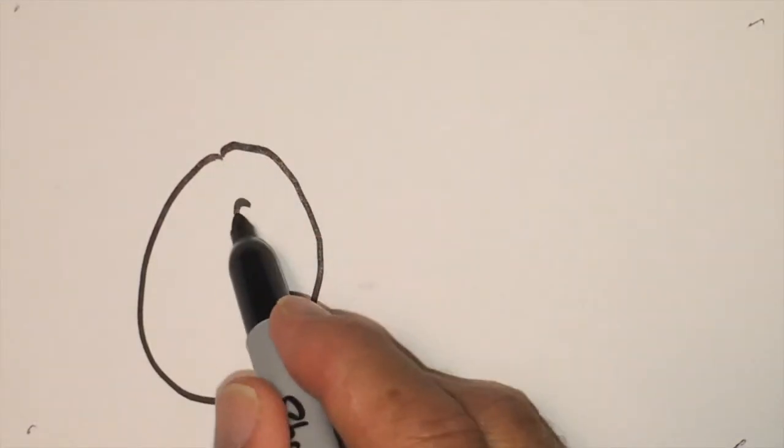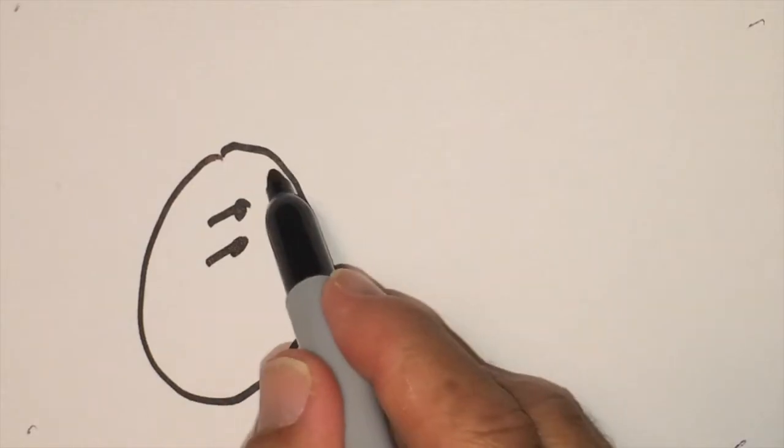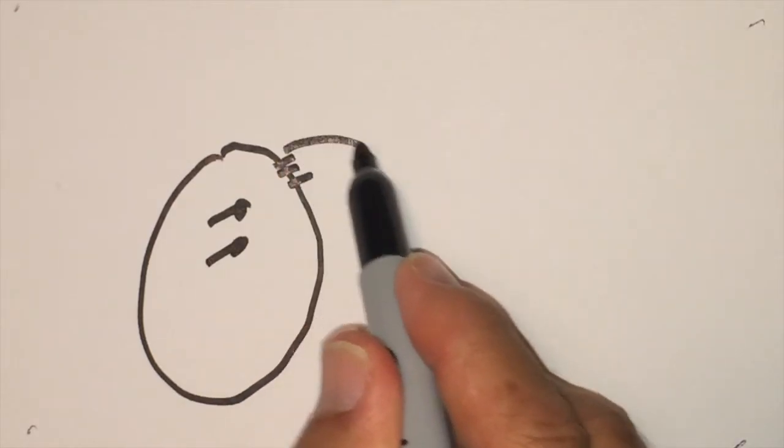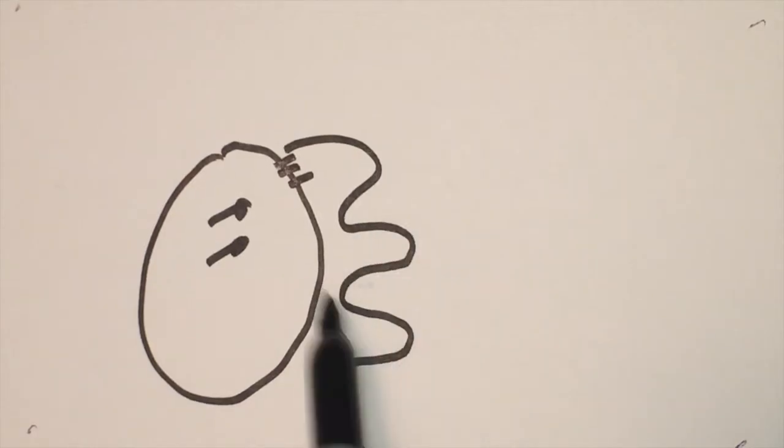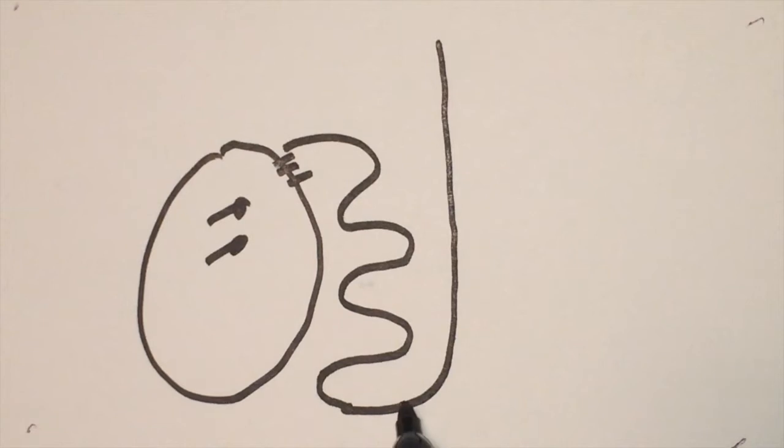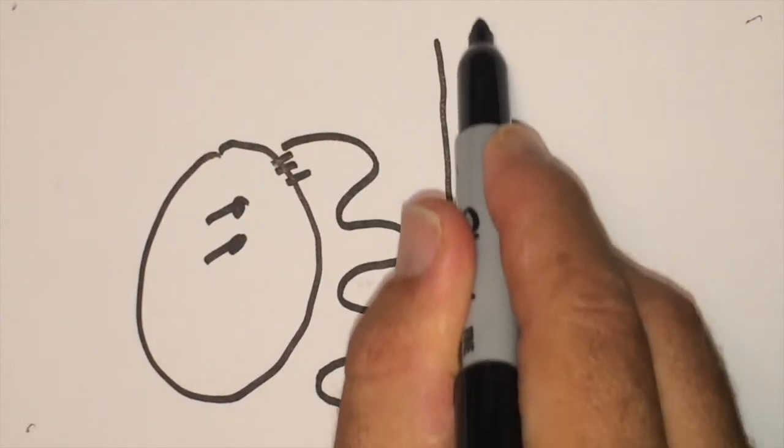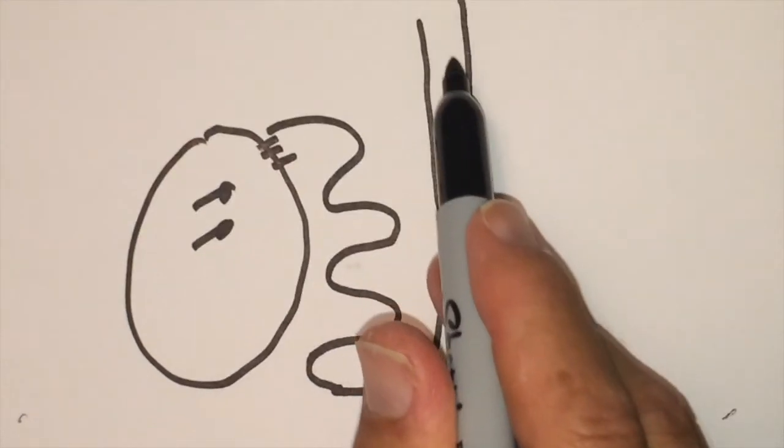The testicle is where the sperm are formed, and they exit out through little passageways into a very twisty thin tube called the epididymis. This is where they get their movement. This tube then straightens out and becomes a bit thicker with a muscular wall that propels the sperm up.